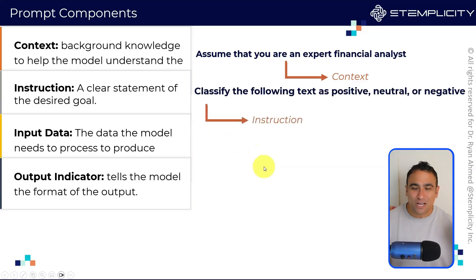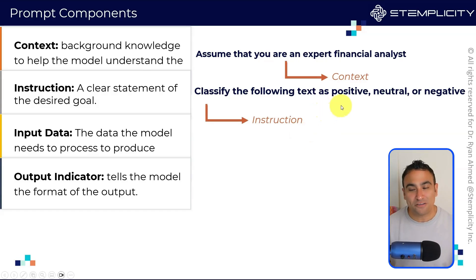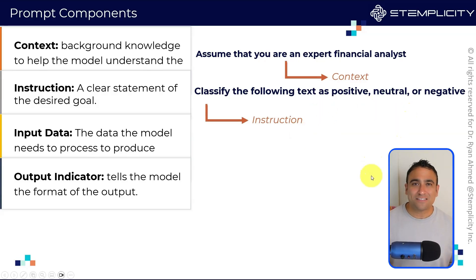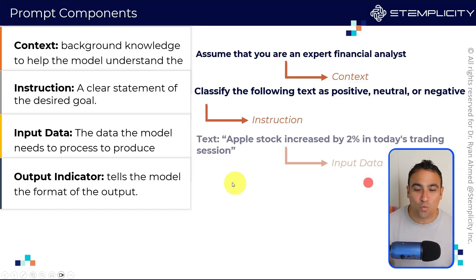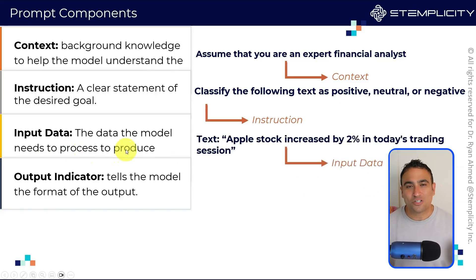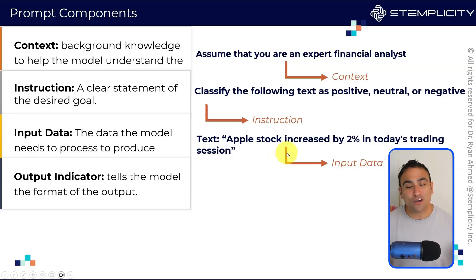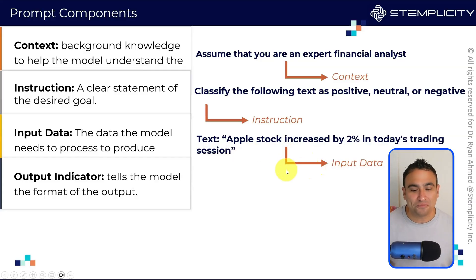For instructions, you can simply ask: 'I want you to classify the following text as positive, neutral, or negative.' Next, if you would like to provide your AI model with input data, you can say, for example: 'Text: Apple stock increased by two percent in today's trading session.'